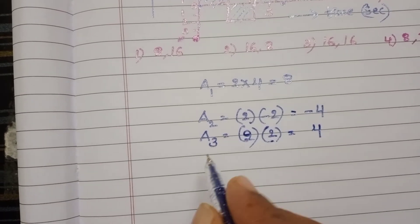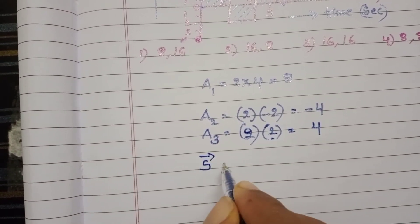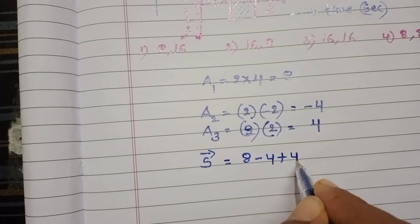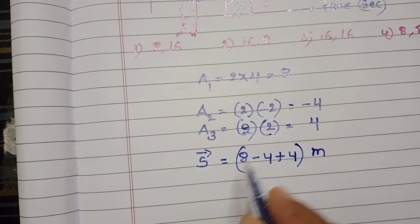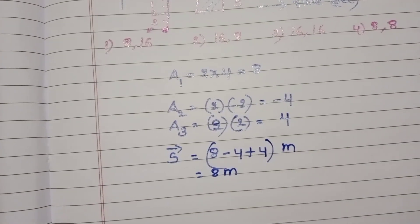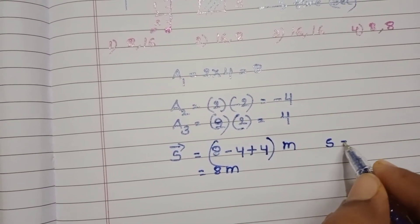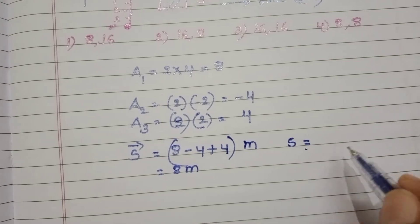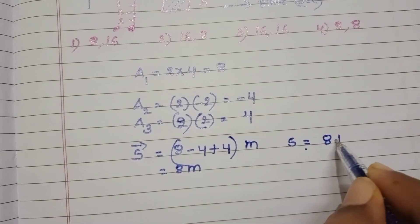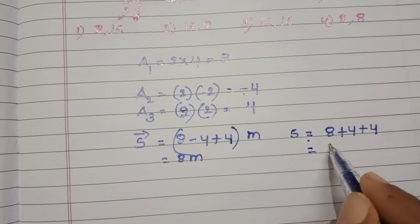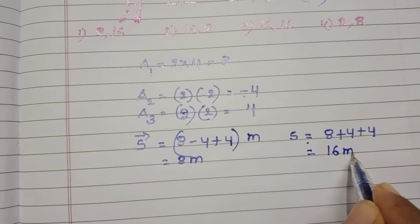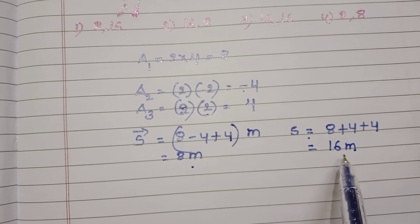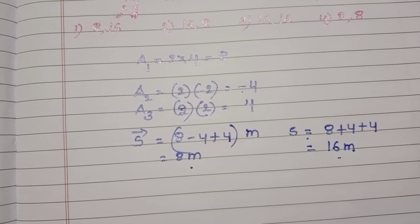Displacement depends upon direction. So in 6 seconds, displacement S equals 8 minus 4 plus 4 equals 8 meters. The displacement of the body in 6 seconds is 8 meters, and the distance travelled by the body in 6 seconds is 16 meters.